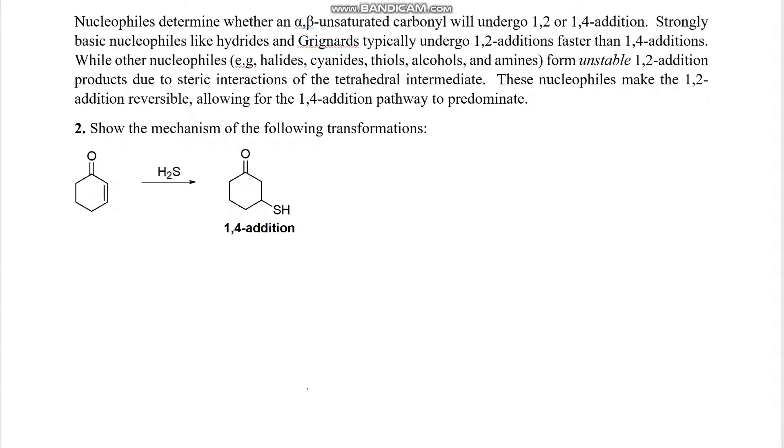For number 2, we need to show the mechanisms for the 1-4 addition. So we're going to start with the lone pairs on that sulfur, and that will attack the beta position, pushing up the pi bonds towards that oxygen. Now that oxygen will now have a negative charge, but those lone pairs will push back down, pushing that pi bond over to give carbon number 2 a negative charge. That will then deprotonate the hydrogen and the acid and create a stabilized substituted enol.